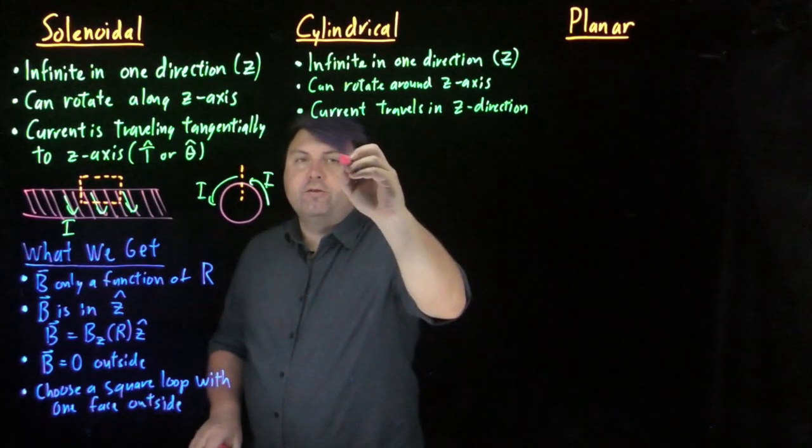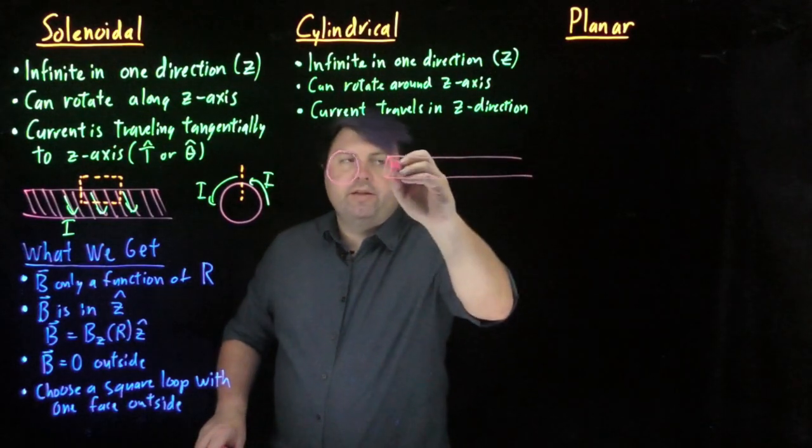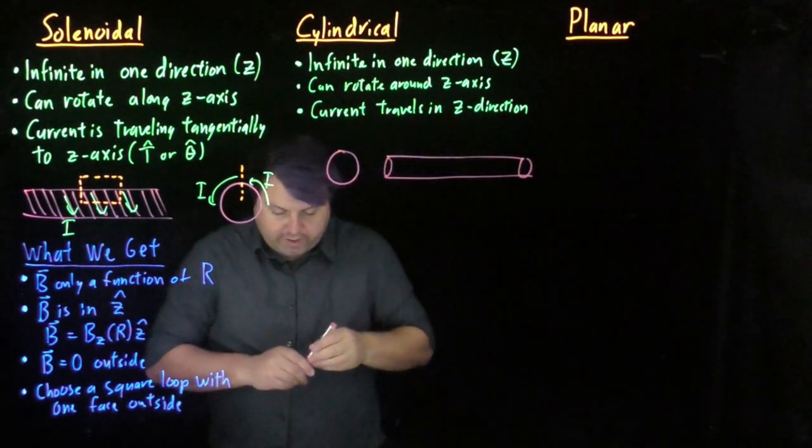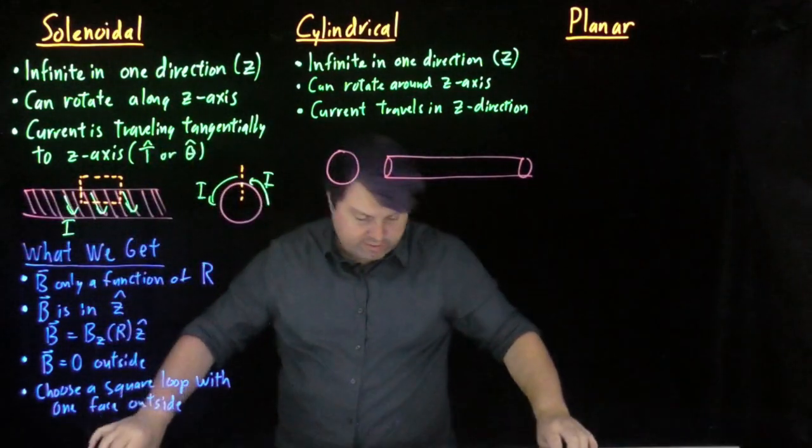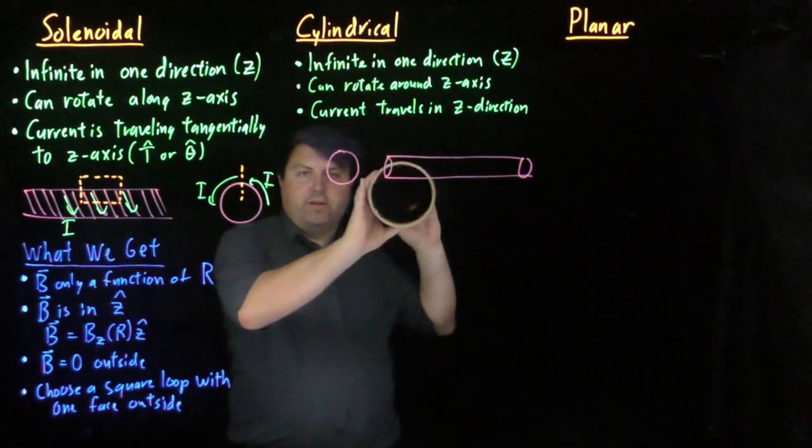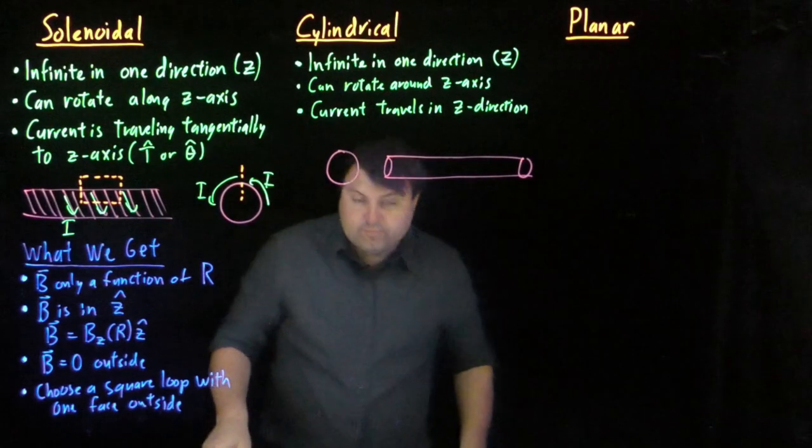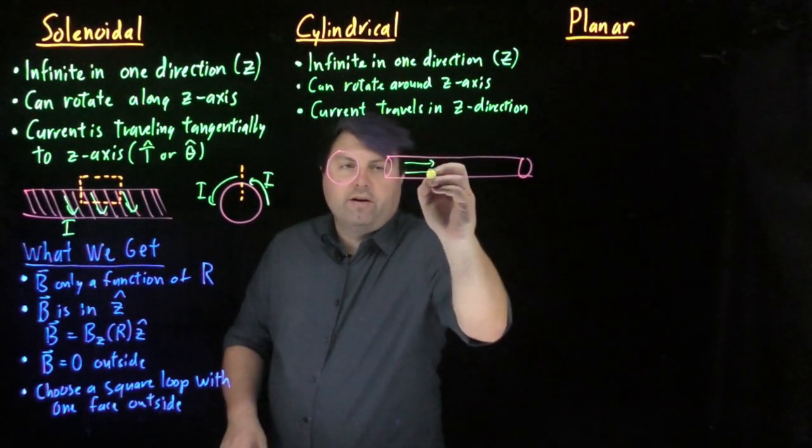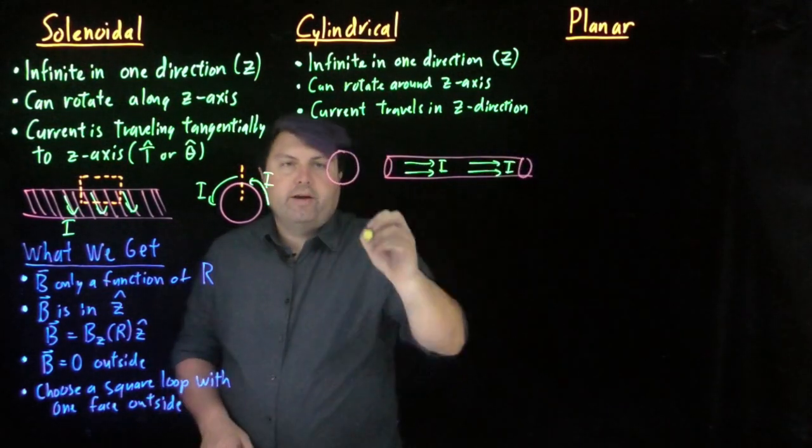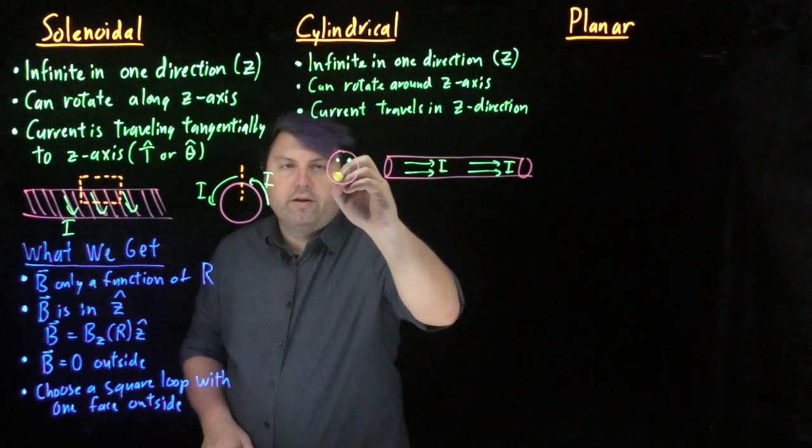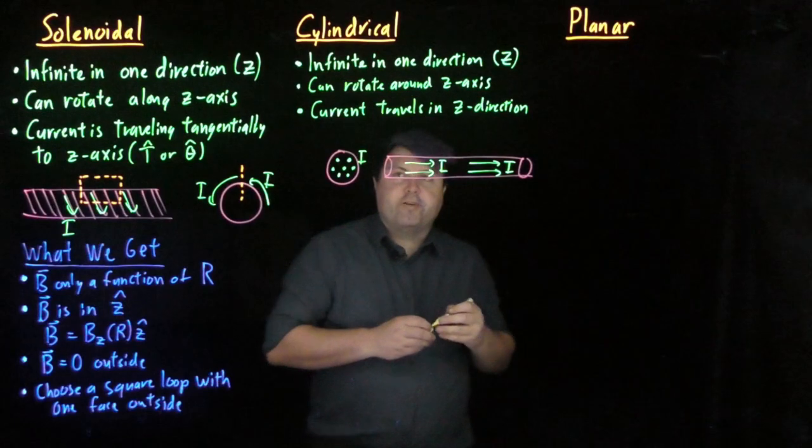So for our cylindrical, we would have then a cylinder looking like this, we'll pull one up. So our cylinder from this perspective might look like this to be infinite, but it might look like this for the face view. And so then we just have that our current is nicely traveling this way, or we can say that we have a current coming either into or out of page here.